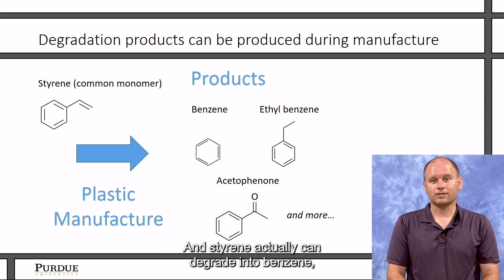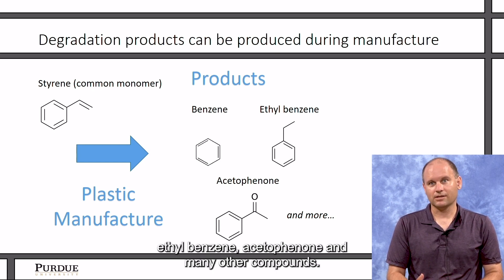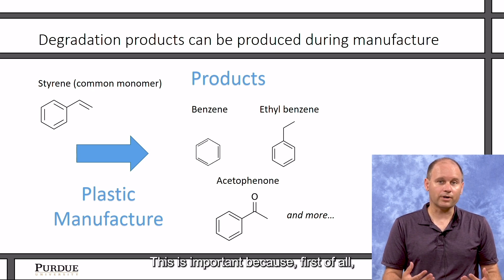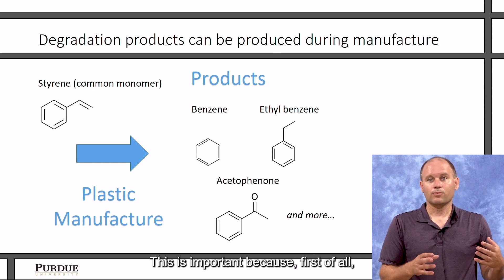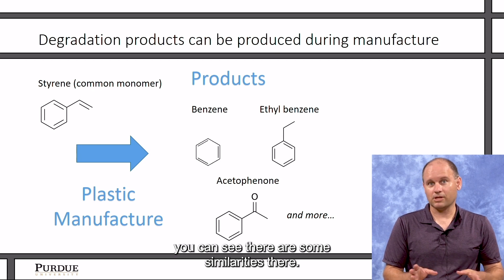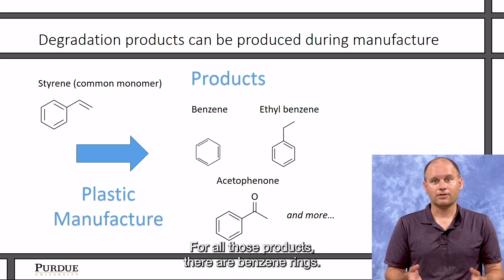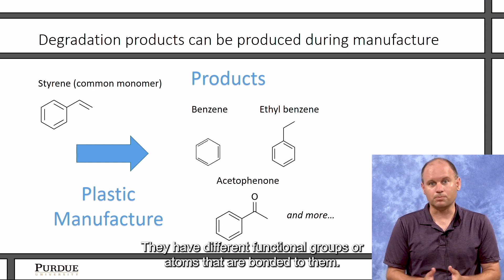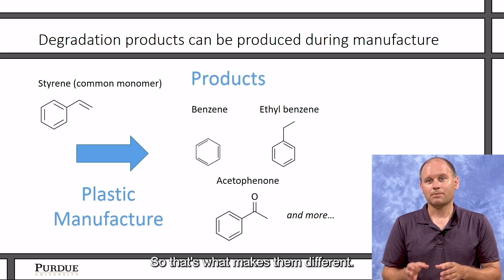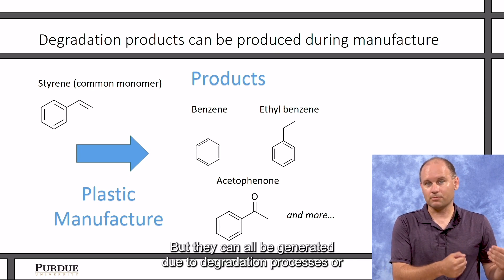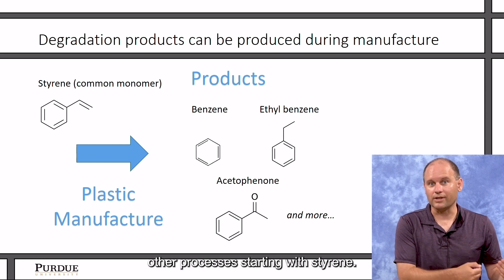And styrene actually can degrade into benzene, ethyl benzene, acetophenone, and many other compounds. This is important because, first of all, you can see there's some similarities there. For all those products, there are benzene rings. They have different functional groups or atoms that are bonded to it—so that's what makes them different. But they can all be generated due to degradation processes or other processes starting with styrene.